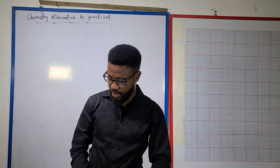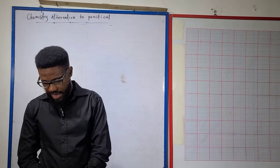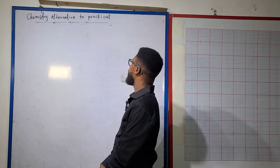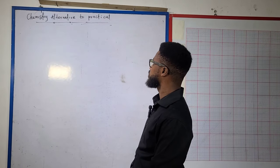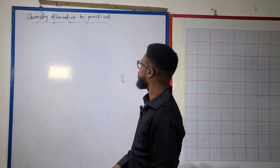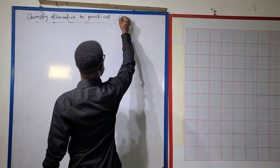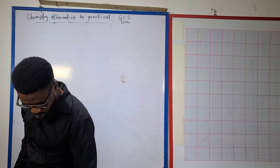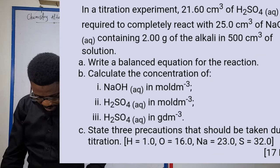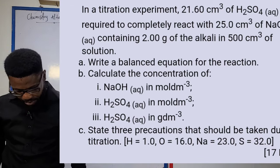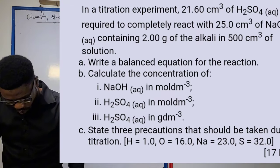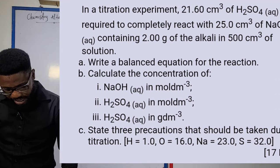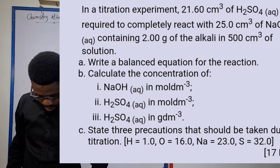Yes, this is 300 Plus Academy. We're back to the business of the day, which is chemistry alternative to practical for the General Certificate Examination. The problem on your screen is a titration experiment where 21.67 cm³ of H₂SO₄ was completely required to neutralize or react with 25 cm³ of sodium hydroxide.